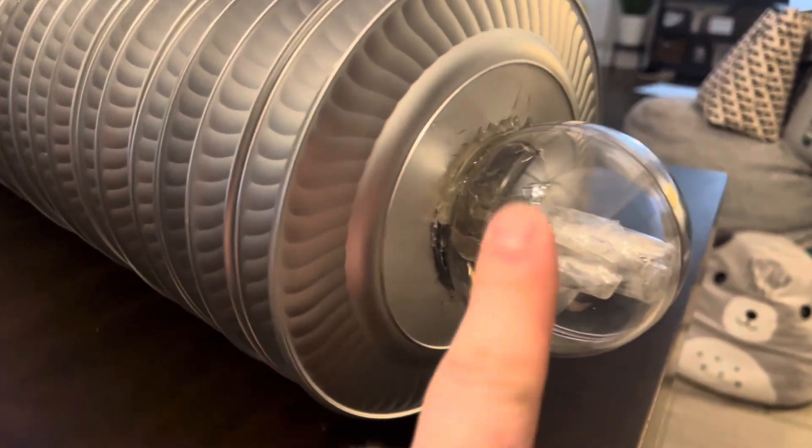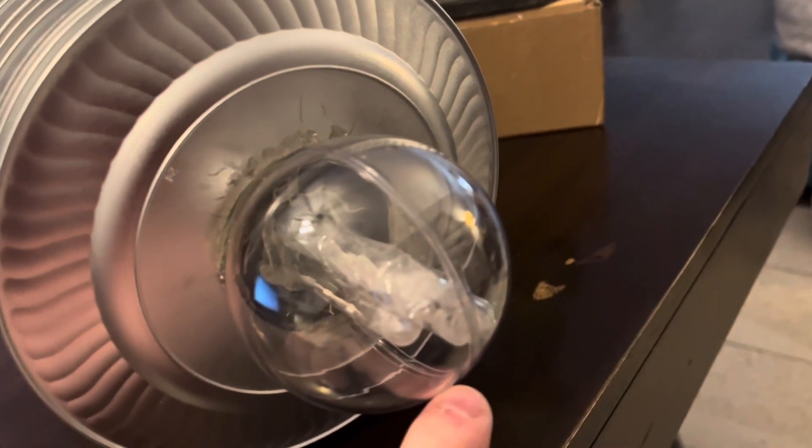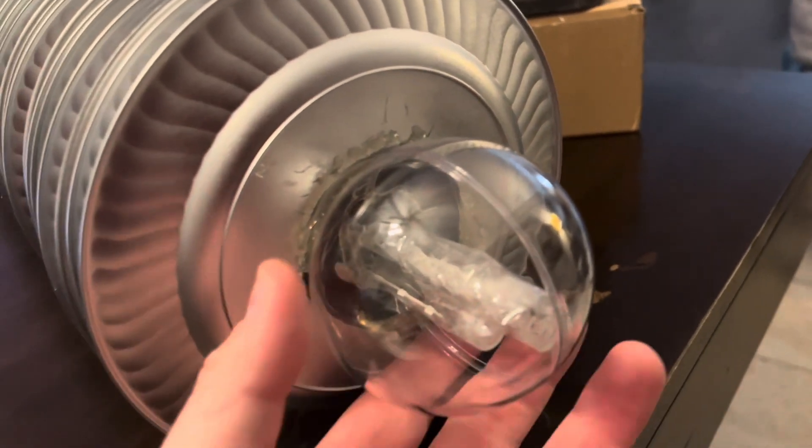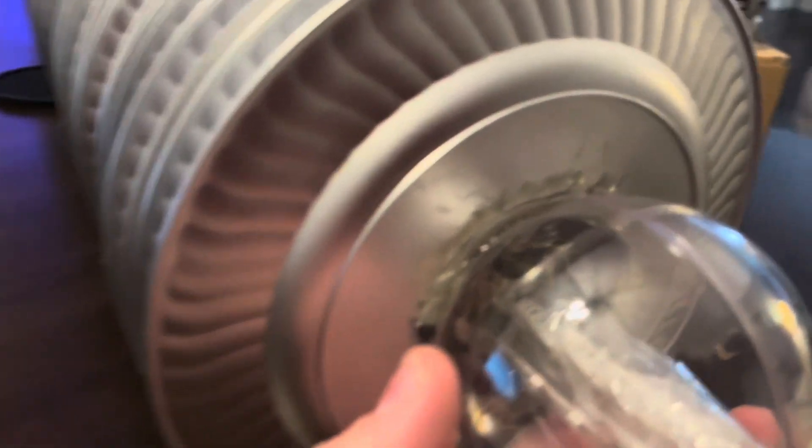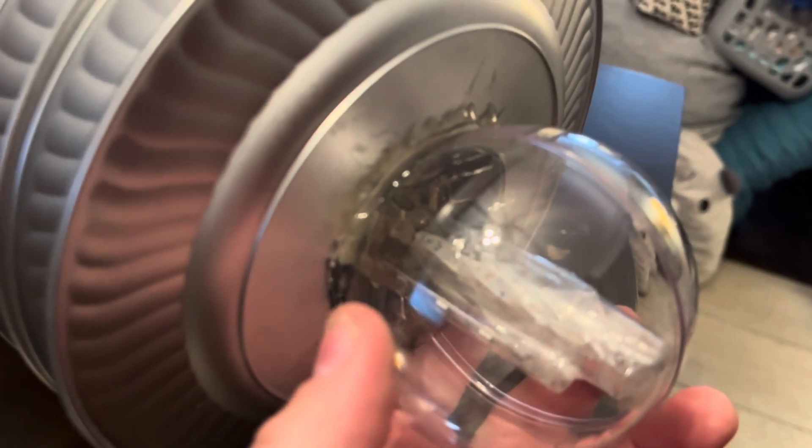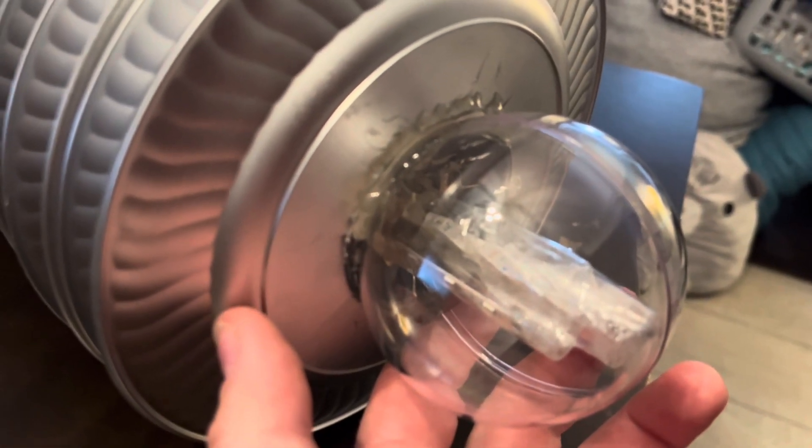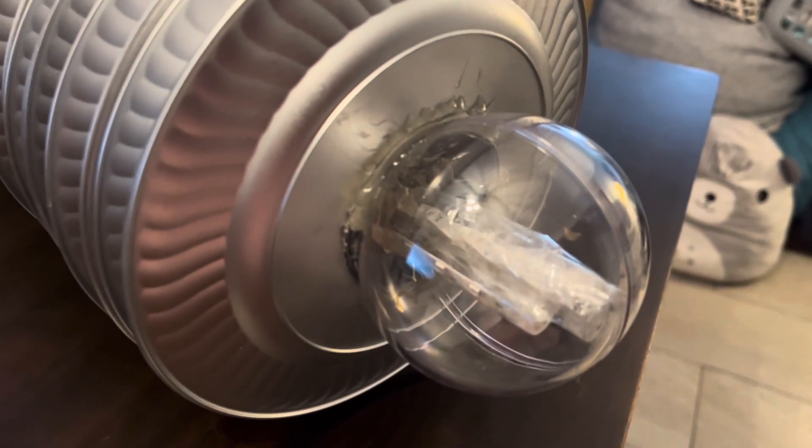All right. So they sell these clear acrylic Christmas bulbs for filling and then hanging. And they just kind of snap together. Well, I just cut the top of it a little bit using my angle grinder. And then I jam the LED lights in there. And now I'm going to paint this metallic just like the rest of it.